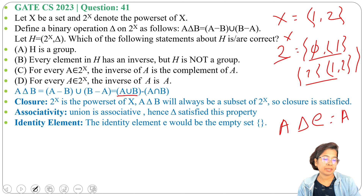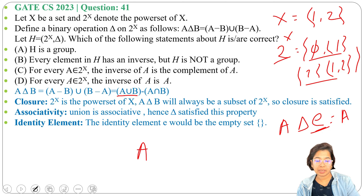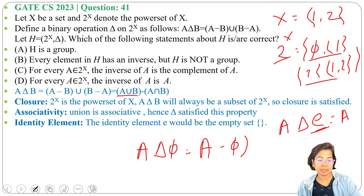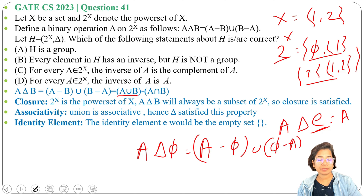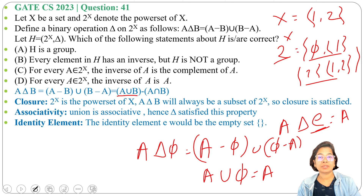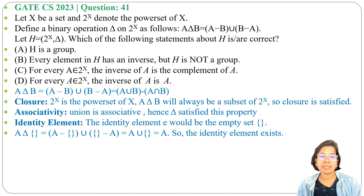Next is identity. Identity means A del E equals A. Here the identity element is phi, the empty set. So A del phi equals (A minus phi) union (phi minus A). A minus phi equals A, and phi minus A equals phi. So A union phi equals A. Therefore, A delta empty set equals A itself, so the identity element is the empty set (phi).